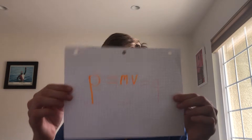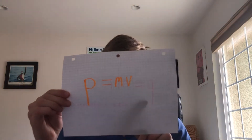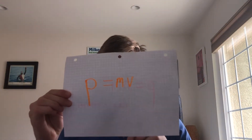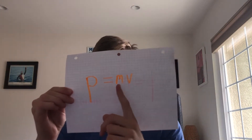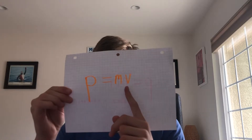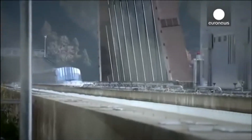The first type is linear momentum, and it follows this equation: linear momentum equals the product of mass times velocity, which in other words is any object that's moving in a straight line.